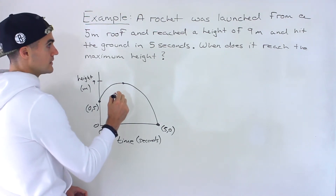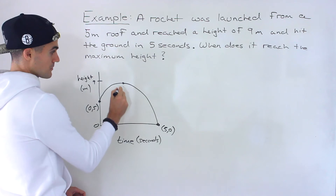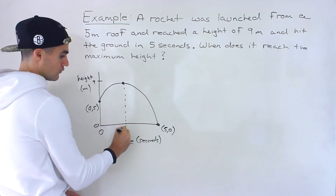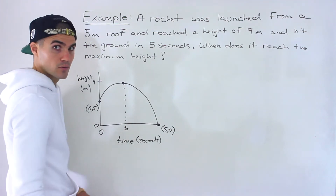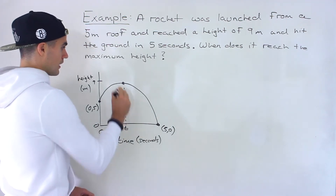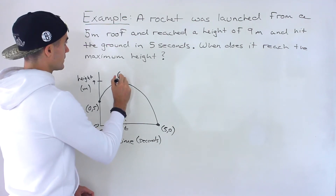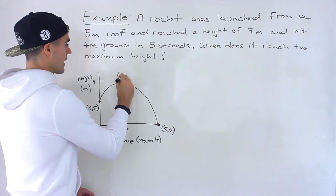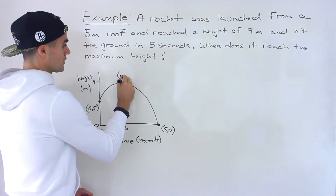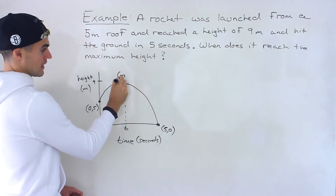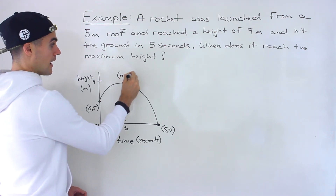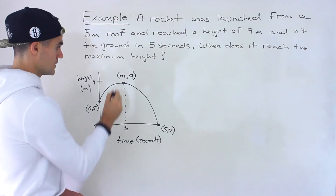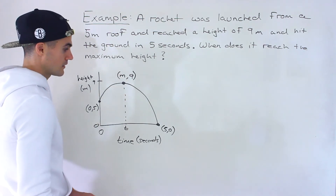What they're asking for is when does it reach the maximum height? They're basically asking for that time at the vertex. We can label that x-coordinate of the vertex as M, with a height of nine. We really need to figure out what that M value is.